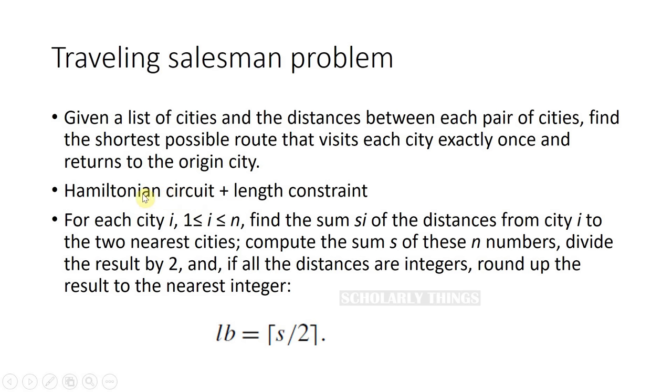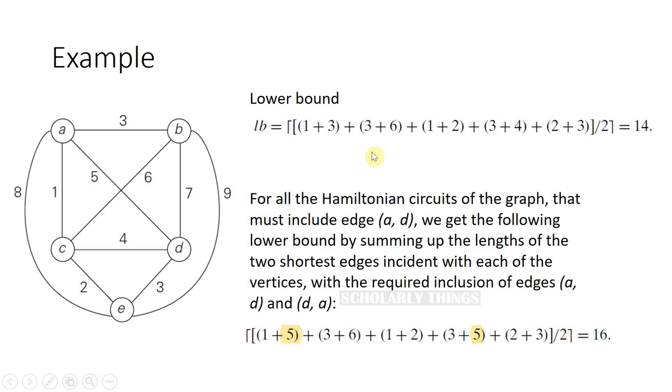It is like a Hamiltonian circuit problem but with an added constraint of length. We can calculate a lower bound of length L by finding the sum Si of the distances from city i to two nearest cities, then compute the sum S of n numbers, divide the result by 2. If all the distances are integers, round up the result to the nearest integer. So the lower bound will be S divided by 2.